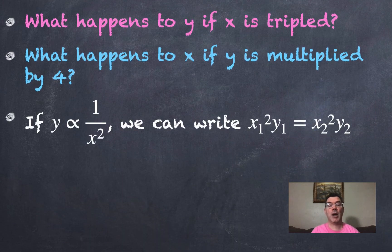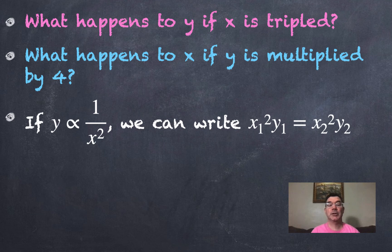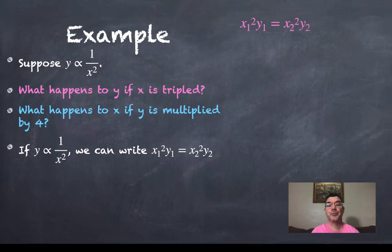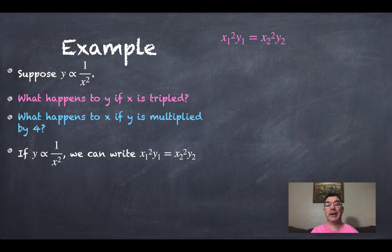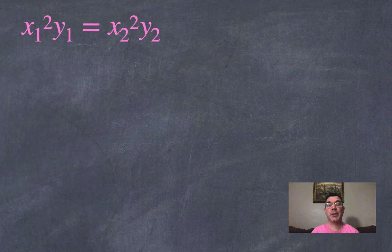So if y is indeed proportional to 1 over x squared, meaning it's inversely proportional to x squared, then I can write that x₁ squared times y₁ is going to equal x₂ squared times y₂. So I'm just rewriting that there in pink so that I can answer the pink question.